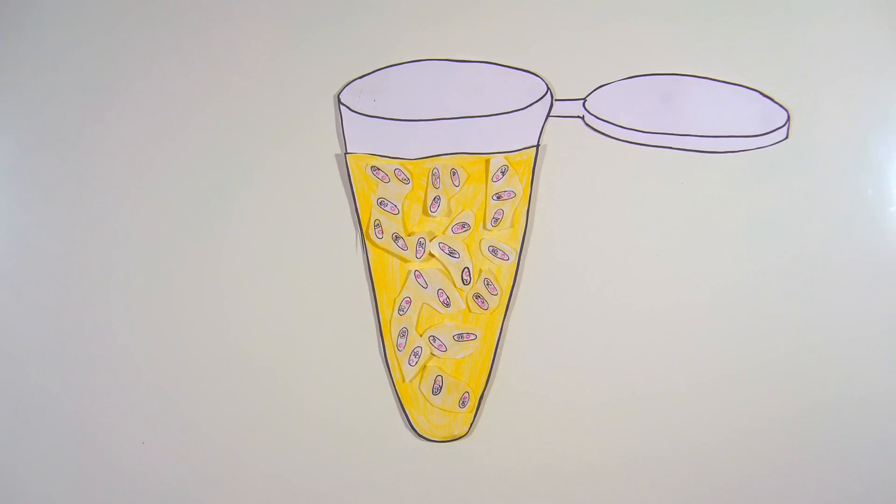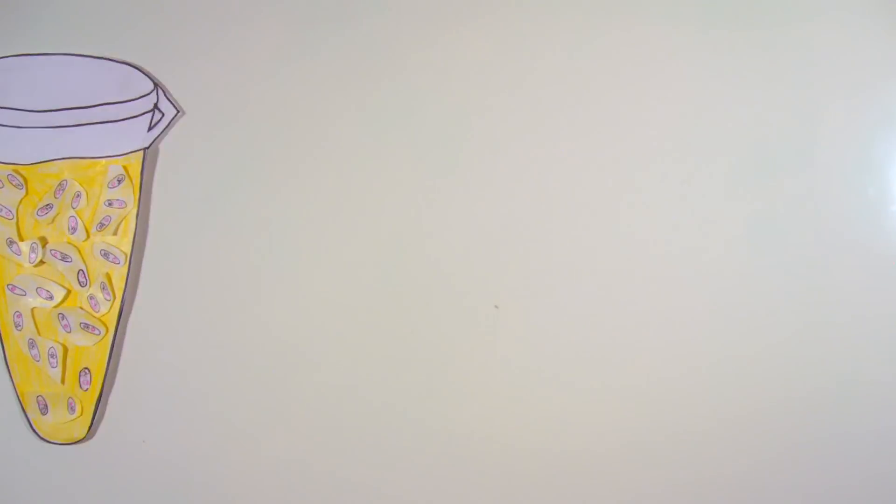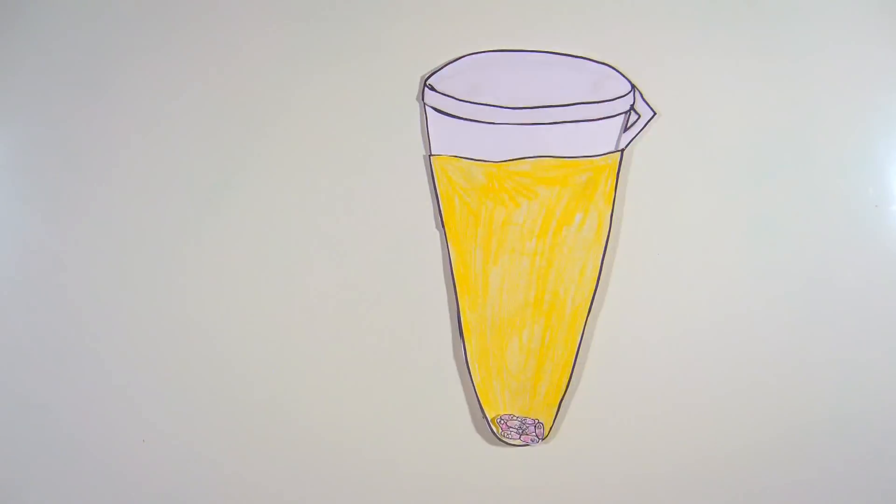Biologists begin with an overnight liquid culture of transformed bacteria carrying the desired plasmid. First, they separate the bacterial cells from the liquid media.